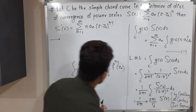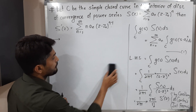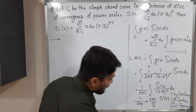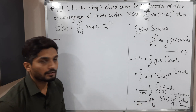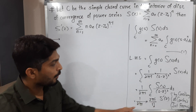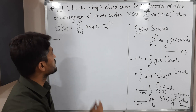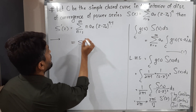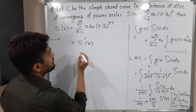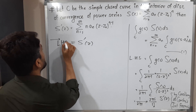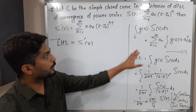The 1/(2πi) and 2πi cancel each other, and 1! equals 1, so the left hand side reduces to S'(z). We have obtained the value of the left hand side.